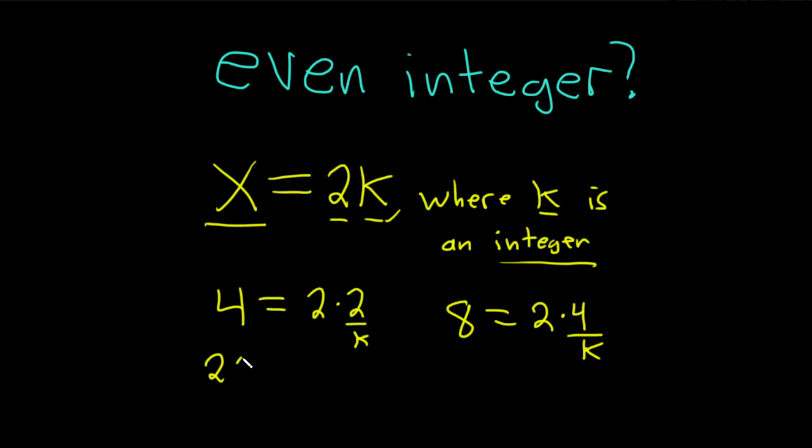What about like 26? Well, that would be 2 times 13, and your k is 13. So you can see you can get every single even integer with this formula.